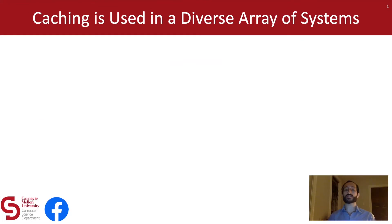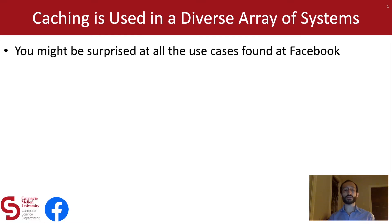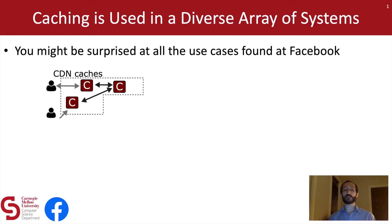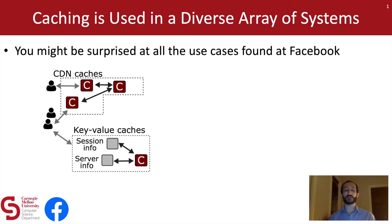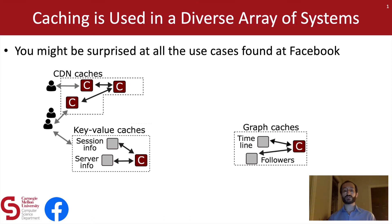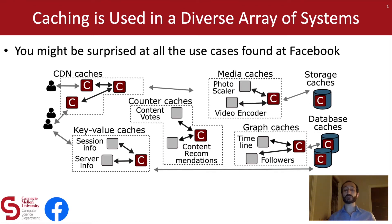We all know that caching is a core concept in system design, and as a result, caches appear at every layer of system architectures. But you might be surprised to find just how pervasive caching is at Facebook. For example, Facebook maintains CDN caches, key value caches, social graph caches, and storage caches — and in between all of these systems are additional layers of caching. Even this drawing here depicts only a small sample of the hundreds of caching use cases at Facebook.